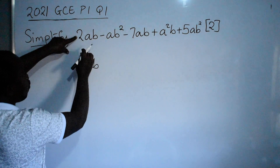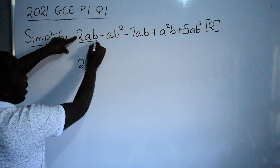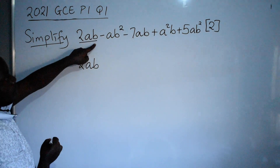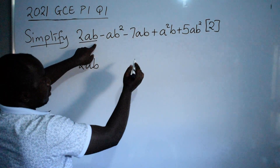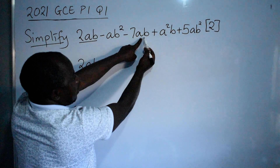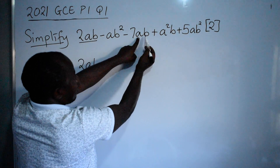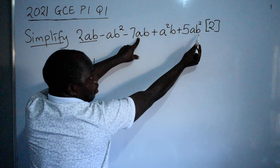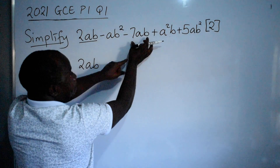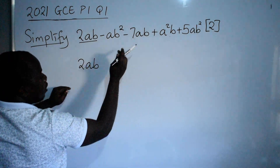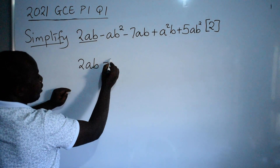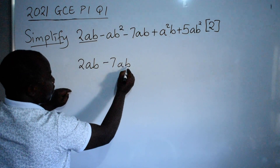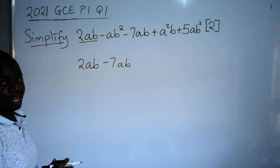You start with 2ab. You look for the pair of this ab. It's here — minus 7ab. The other terms are not the pair. So you write 2ab and minus 7ab together. You are done with that pair.